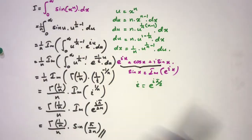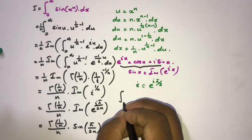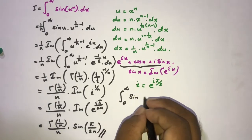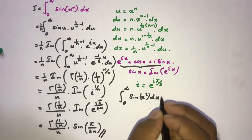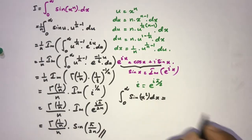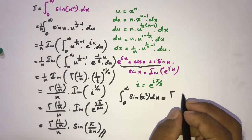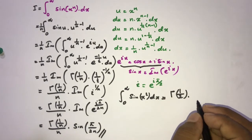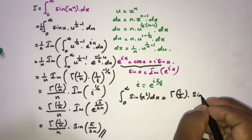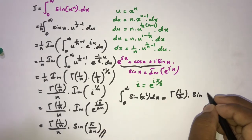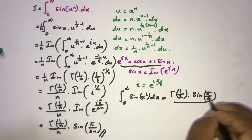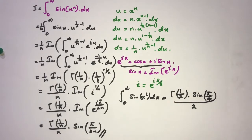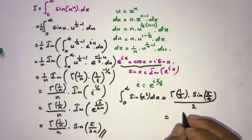Now we evaluate the special case: the integral from zero to infinity of sin(x squared) dx — the classic Fresnel integral. Using our formula with n equal to 2, the answer is Gamma(1 over n) over n times sine of pi over 2n, which gives Gamma(1 half) over 2 times sine of pi over 4.